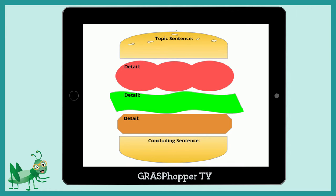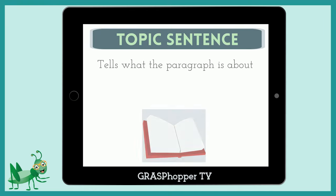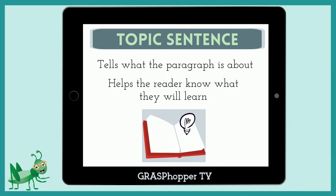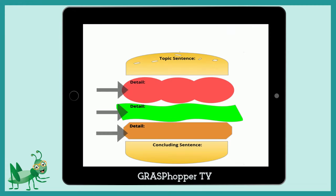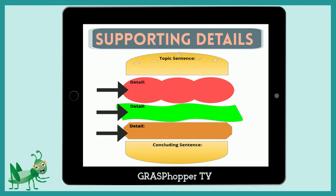In the previous Grass Popper teaching video, we learned that the top bun of the hamburger is for the topic sentence. A topic sentence tells what the paragraph is about and helps the reader to know what they will learn. Supporting details hold up the topic sentence, just like the lettuce, tomato, and patty hold up the bun of the burger.